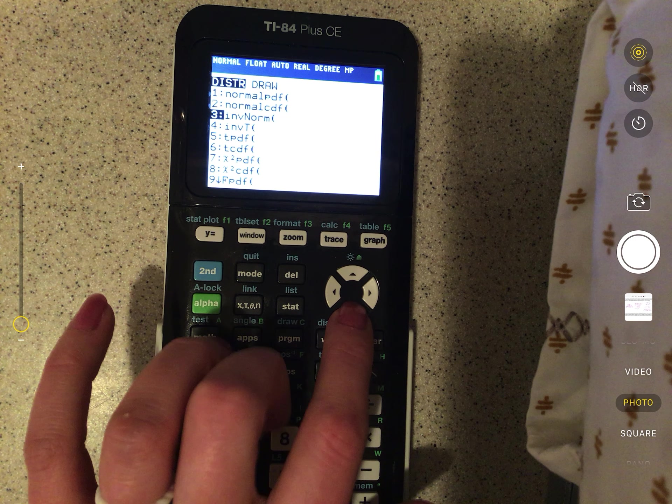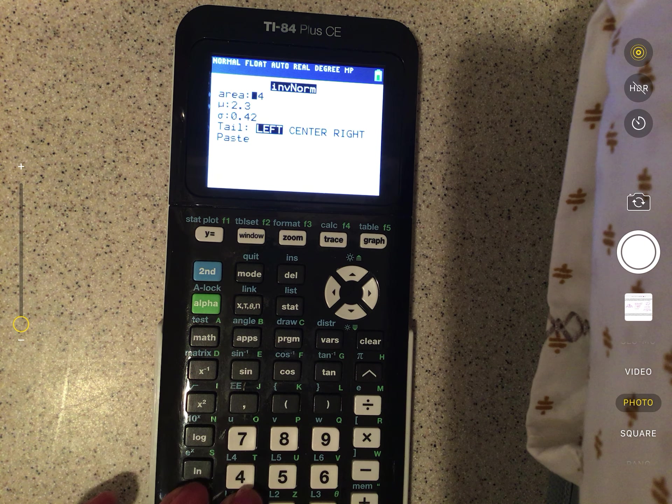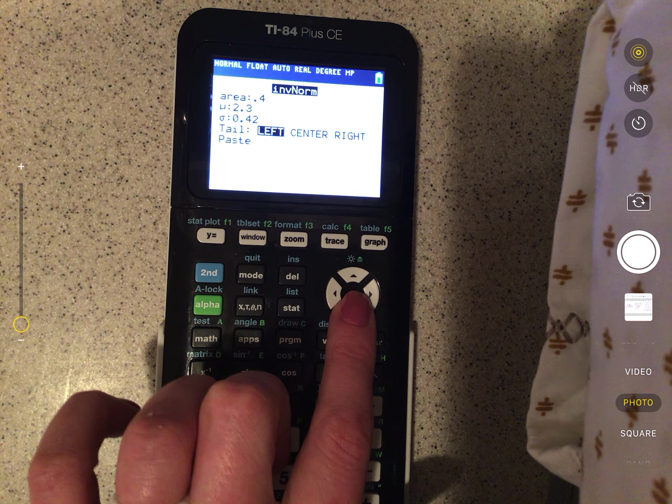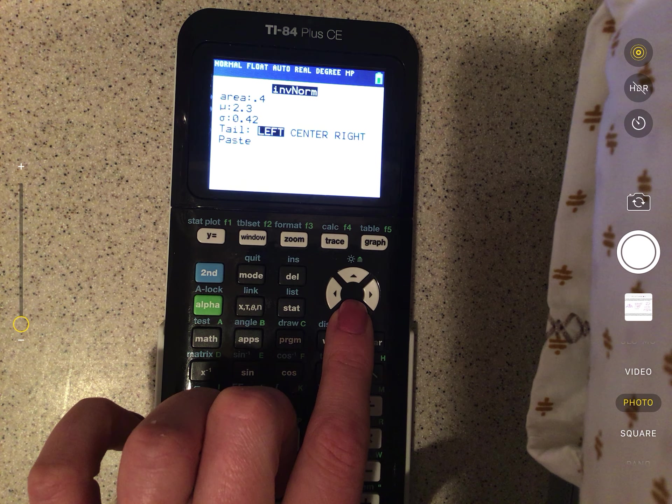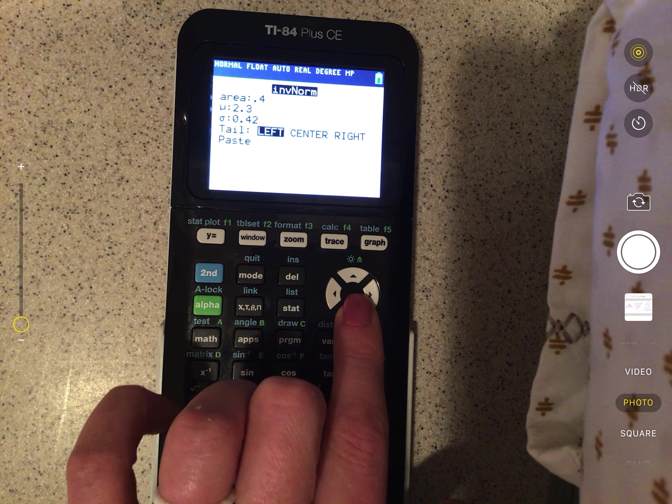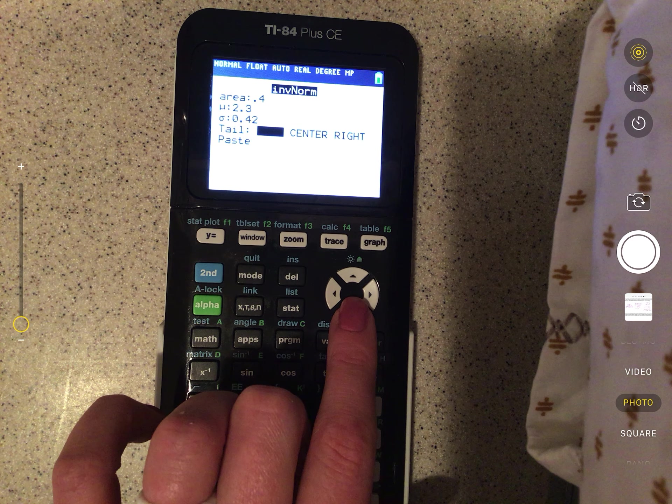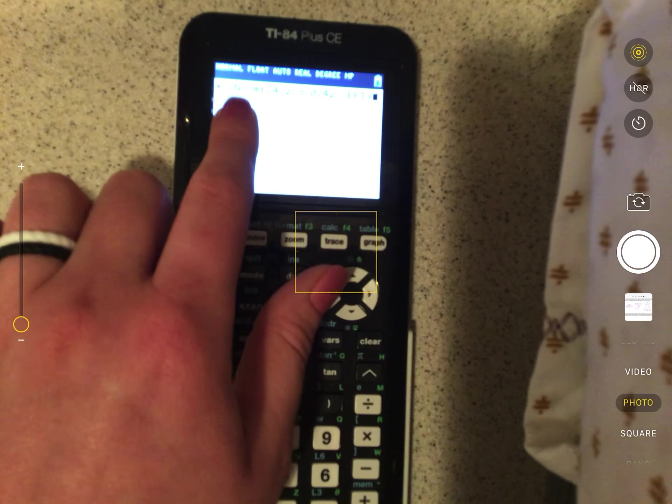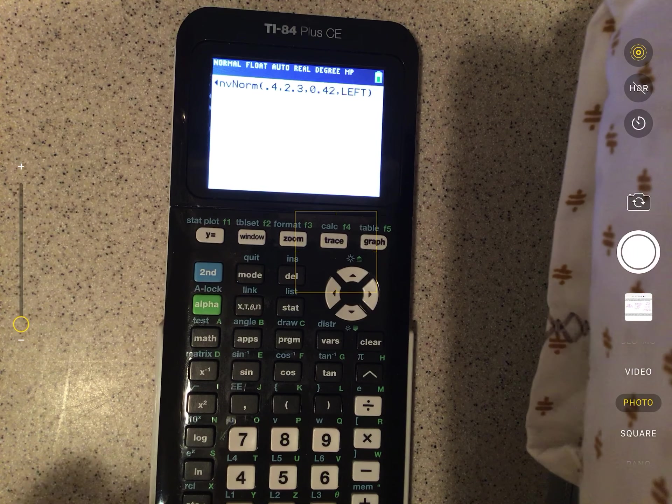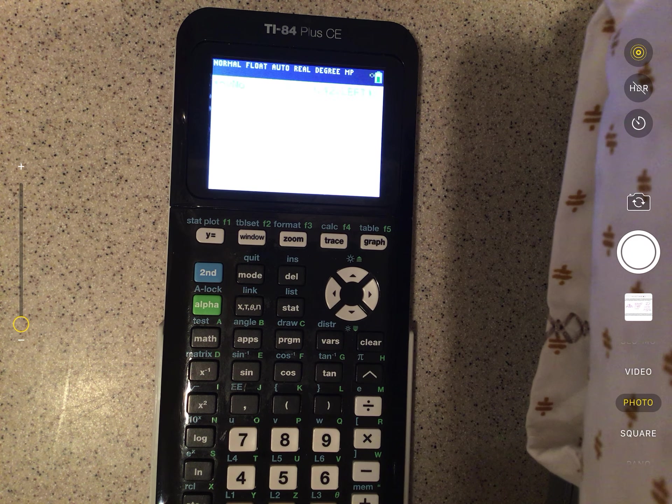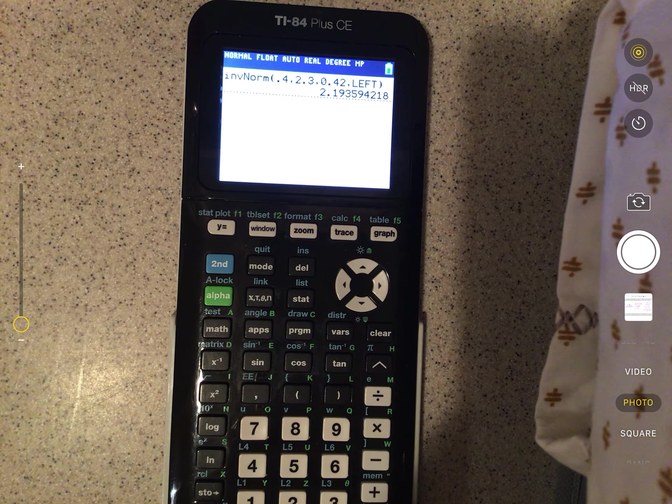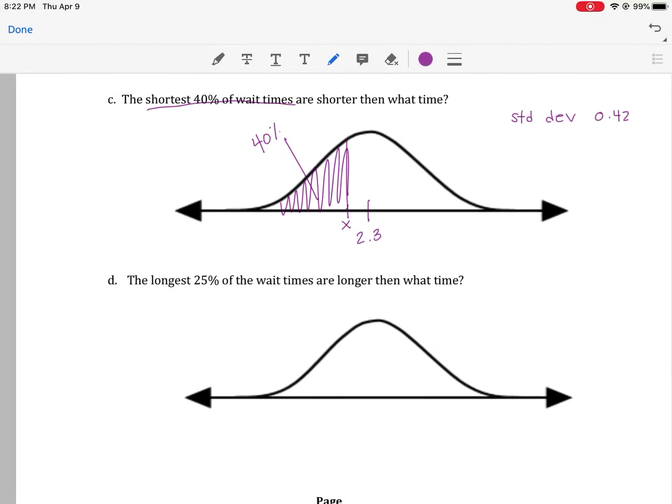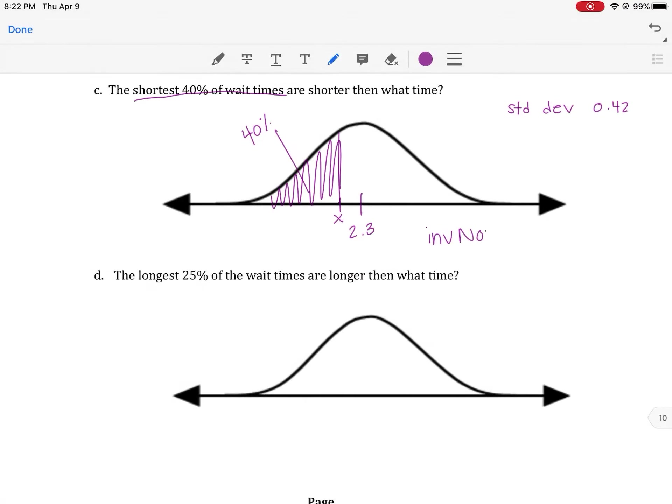So I'm going to switch to my camera real quick and we can see my calculator. On the calculator, we're going to follow the same steps of hitting second and then vars. But this time, rather than doing number two, we're going to go down to three. And it asks you for some inputs. The area is 0.4, the mean is 2.3, the standard deviation is 0.42. And this time, we're doing left because it's a left-tailed test. We're looking for the area on the left. And we're going to hit paste and enter. And 2.19 minutes is going to be our cutoff.